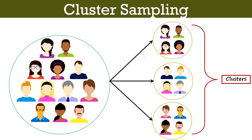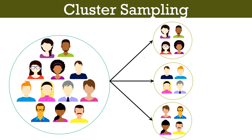There should not be any overlapping between clusters, and when taken together the clusters should cover the whole population. In our example we cover all schools in the city to avoid overlapping, since students are enrolled in only one school. We then select clusters for the sample by allotting a distinctive number to each school and selecting samples randomly.